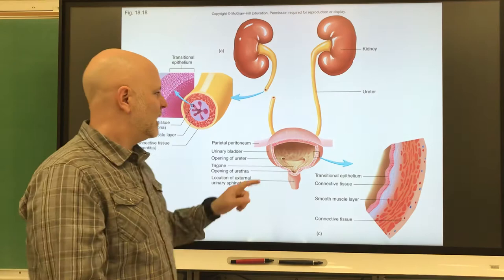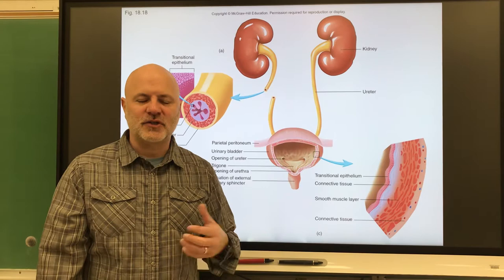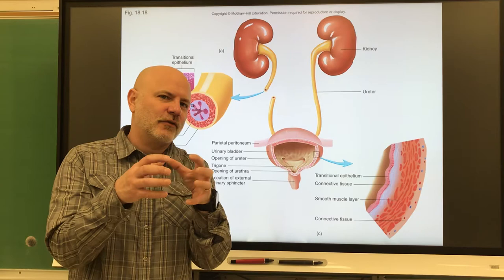All right, let's take a look at the urinary bladder here. So this is a hollow, distensible muscular organ that stores urine. Now distensible means stretchable, but you've got to think about it as stretching three-dimensionally. So like blowing up a balloon.